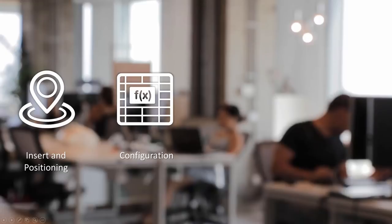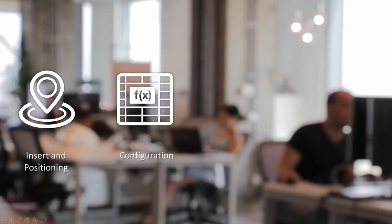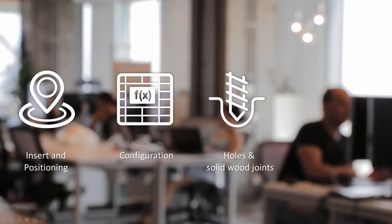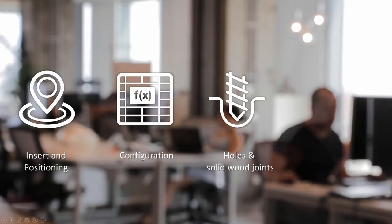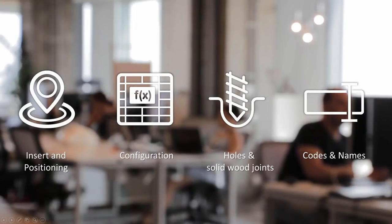Now let's speak about the hardware. We'll have four main stages: first, insert and position the hardware items; second, configure them, because maybe in some places the configuration should differ; third, make holes or wooden joints; and finally, define the right codes and right names. Let's speak about each of those steps in more detail, beginning with positioning.